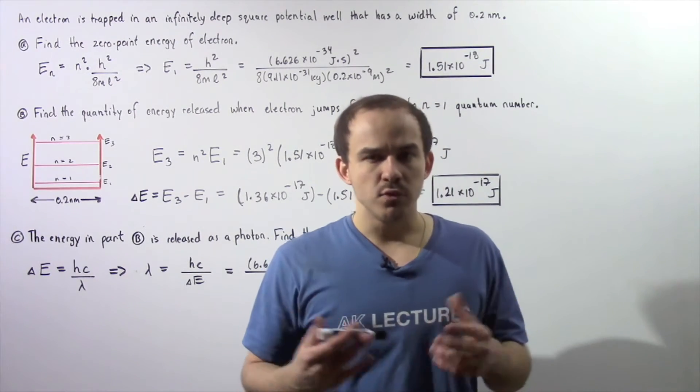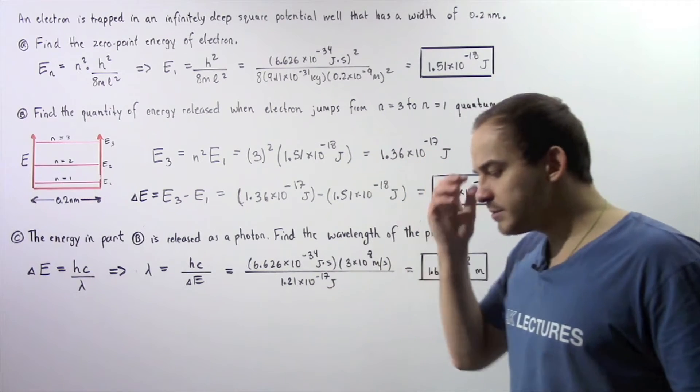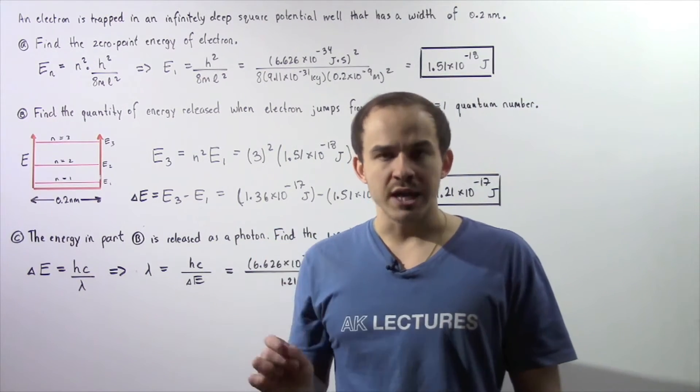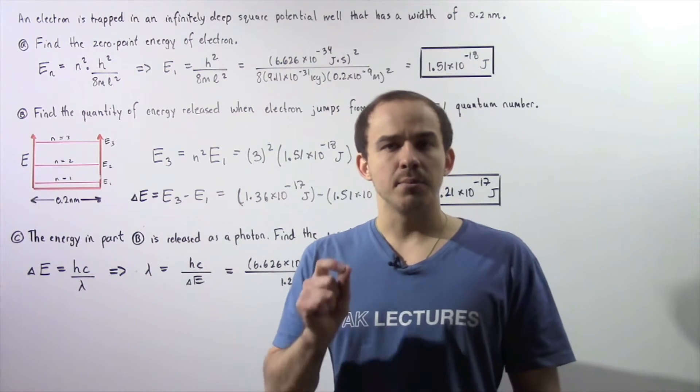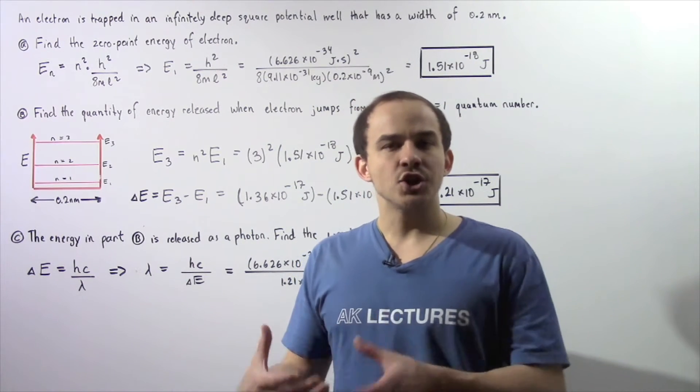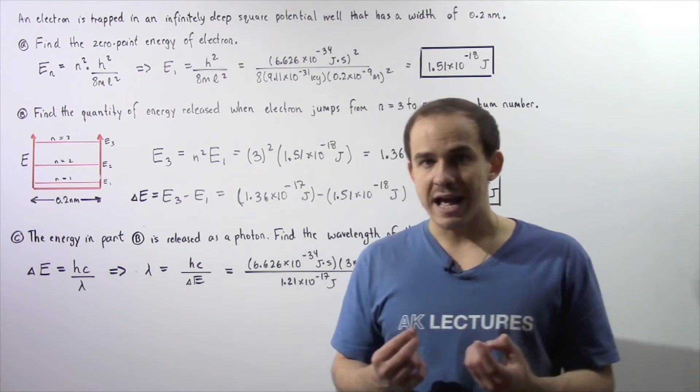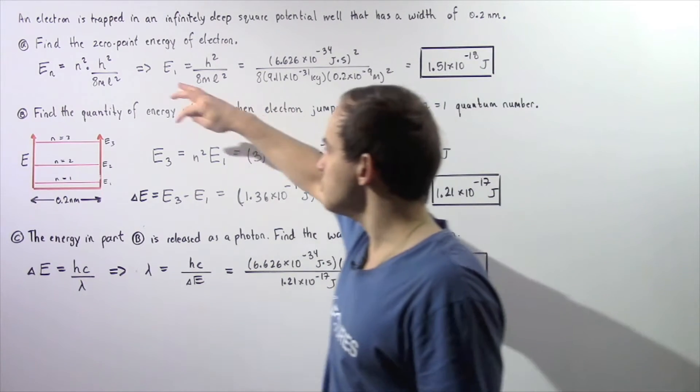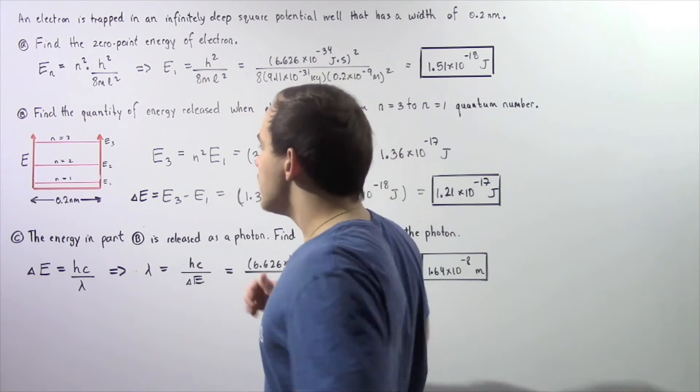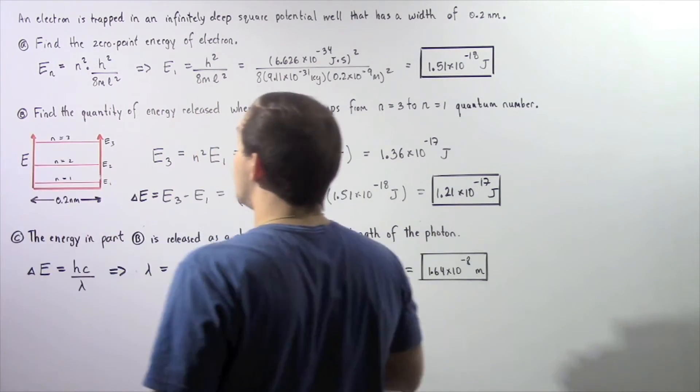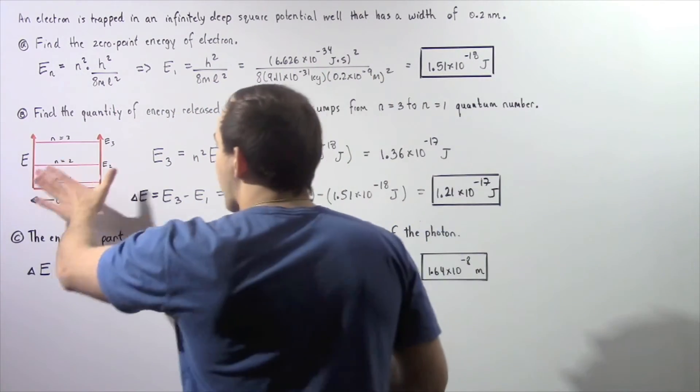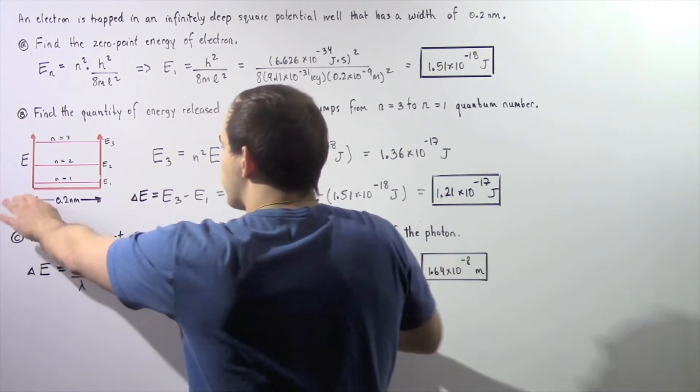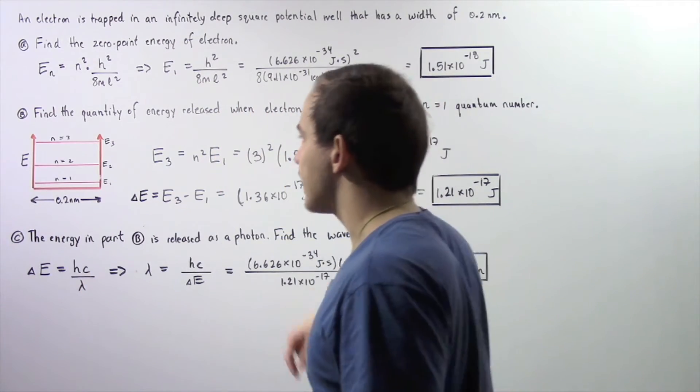Now we want to move on to part B. In part B, we begin with an electron in quantum number n equals 3, and then that electron jumps to quantum number n equals 1. And a certain quantity of energy is released. We want to calculate what that quantity of energy that is released is. Let's look at the following graph. We basically have the following infinitely deep square potential well, our rigid box. And our electron is basically moving along the following width of the bottom of our rigid box.